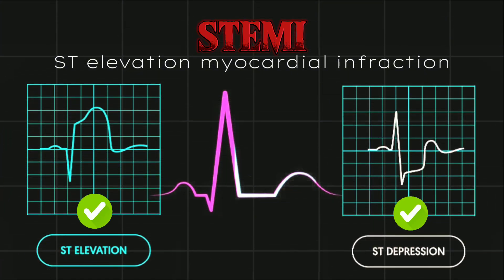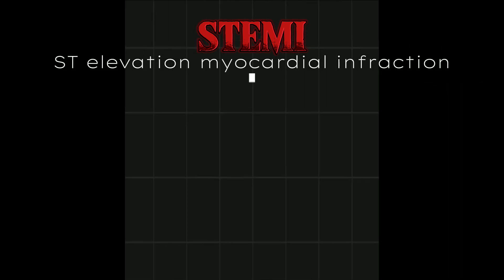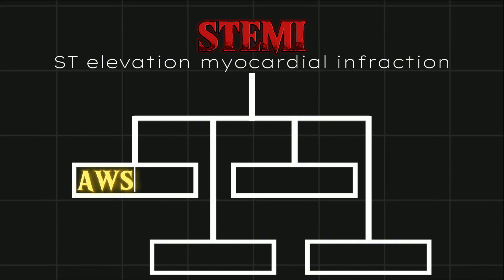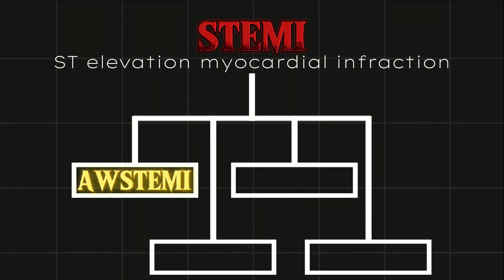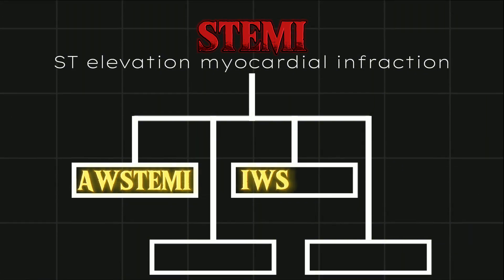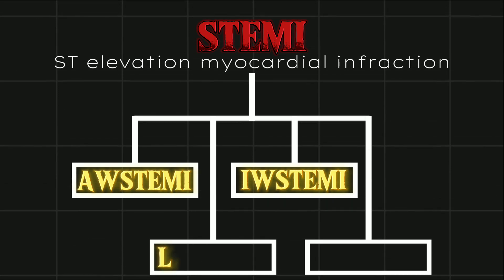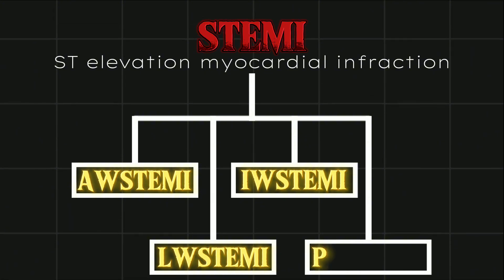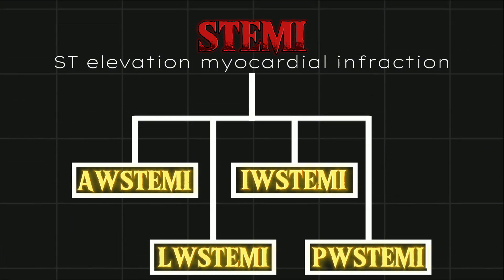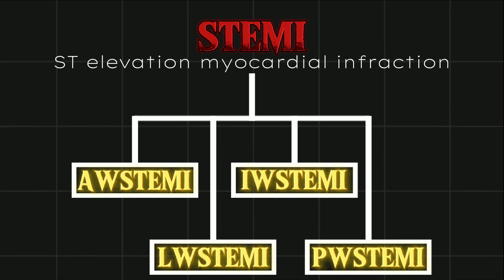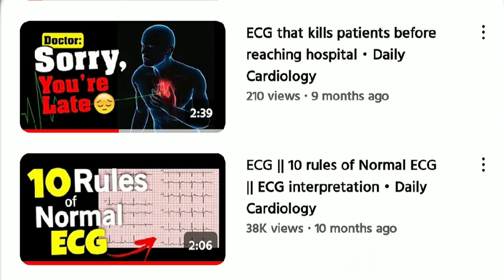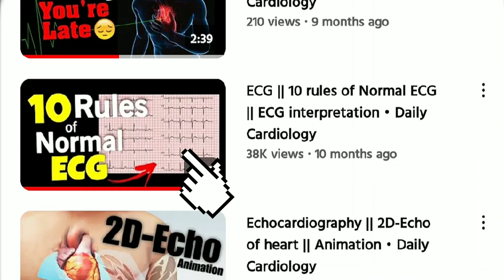ST elevation myocardial infarction has further 4 types: anterior wall, inferior wall, lateral wall, and posterior wall ST elevation myocardial infarction. To learn these 4, we will need a 12-lead ECG format. I have made a video for normal ECG — you can check it out in the description if you like.